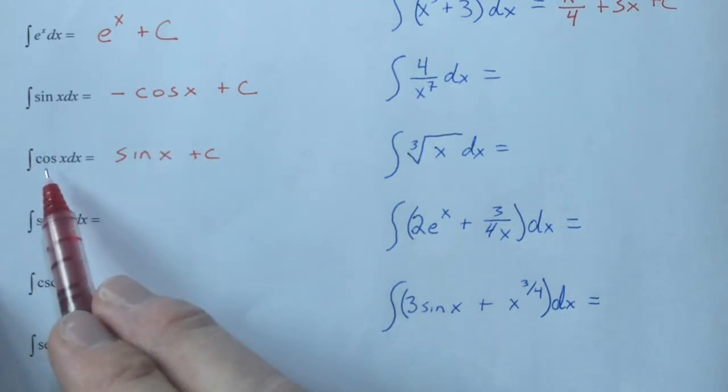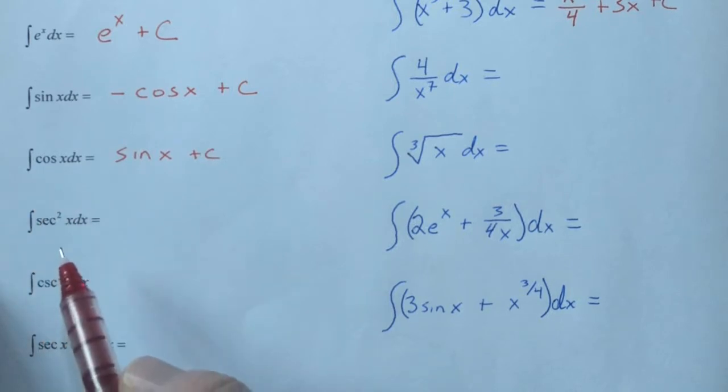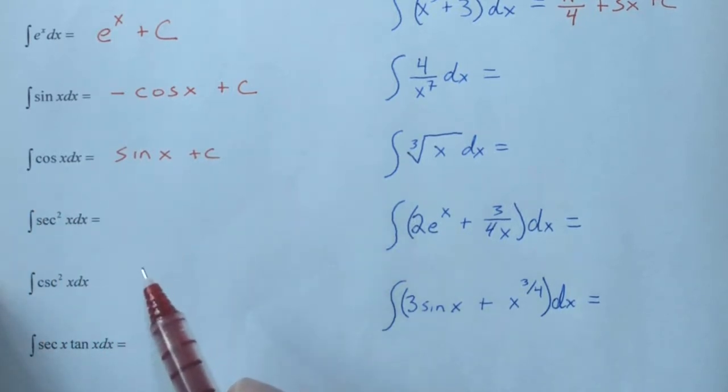Same thing. The derivative of cosine is negative sine, but the antiderivative of cosine is sine. You have to be able to distinguish between the two.